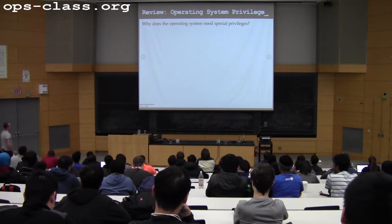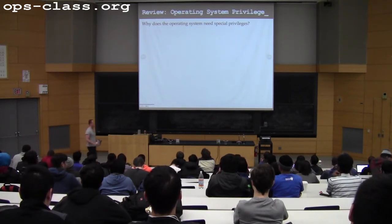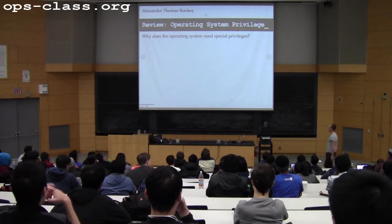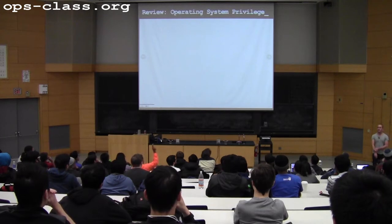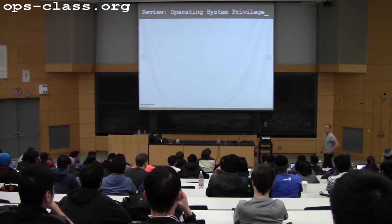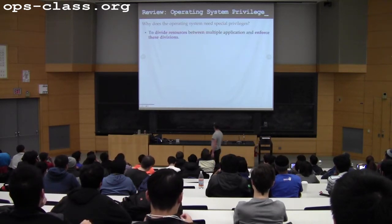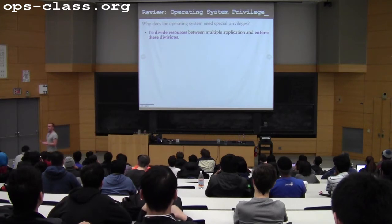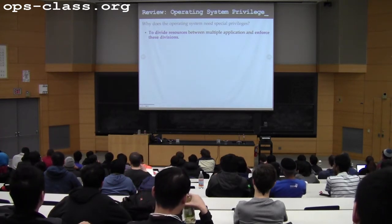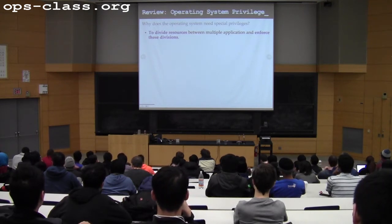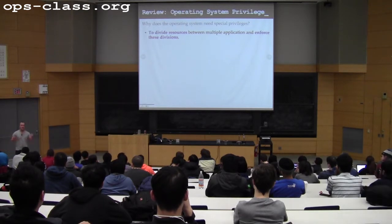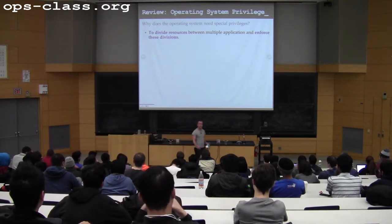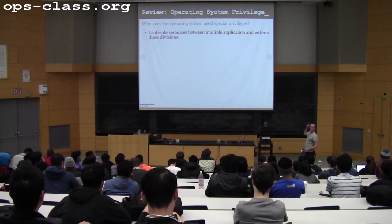Let's do a little review. On Friday we talked about how the operating system gets these special privileges — why are they required? Why does the OS need special privileges? To multiplex resources and to enforce those divisions. The operating system has been put in charge of making efficient use of the resources on the system. Because I have multiple processes trying to use the machine at the same time, the OS is in charge of making sure everybody makes progress and that resources don't go to waste. That's why operating systems have these special powers — so they can perform their essential functions.